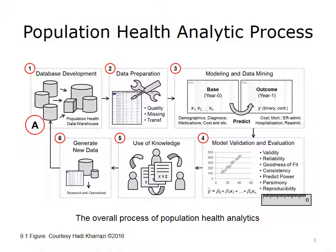However, if such transformations are not possible and the model's assumptions cannot be met, a different model should be used that matches with the nature of the data. The next step contains the development of modeling and data mining approaches. As depicted in box 3, this step usually requires a base data set and an outcome data set. If based on insurance claims data, the base data set usually includes one year of medical and medication claims that would provide most of the independent variables, and the outcome data set often includes the dependent variables such as cost or other utilization markers. Thus, the predictive model is usually developed based on the base data set, and the predictive accuracy of it is often measured on the outcome data set.